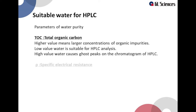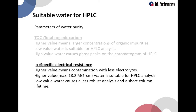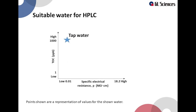High TOC value water causes ghost peaks on the chromatogram of HPLC. Regarding specific electrical resistance, a higher value means there are fewer electrolytes in the water, and higher value water is suitable for HPLC analysis. Lower value water causes less robust analysis and a shorter column lifetime. There is a broad distribution of TOC values and specific electrical resistance values in tap water.